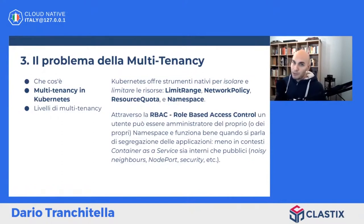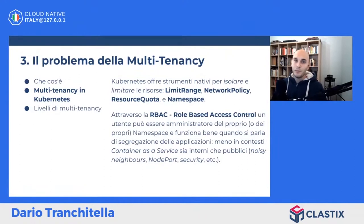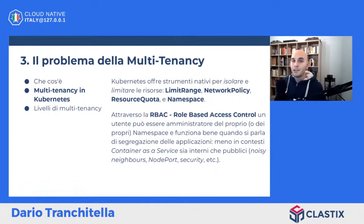Le network policy sono fondamentali per effettuare una segregazione del networking, dando la possibilità alle applicazioni di dialogare con l'esterno o di bloccare il traffico. Con le network policy potete dire che il frontend può comunicare esclusivamente con il backend, e il backend può dialogare esclusivamente con il database. Questo vale sia all'interno del singolo namespace che per applicazioni che vivono al di fuori, quindi i pod di produzione non possono parlare con i pod di sviluppo o staging. Le resource quota sono il fulcro della multitenancy in Kubernetes, permettendo di impostare limiti globali a livello di namespace: massimo 100 pod, 20 terabyte di storage, o tot gigabyte di memoria.